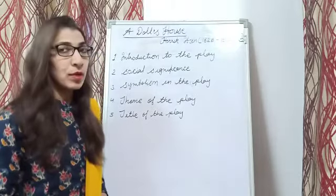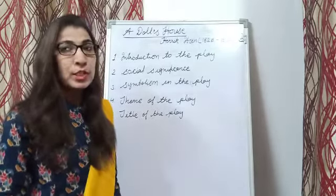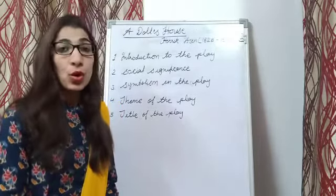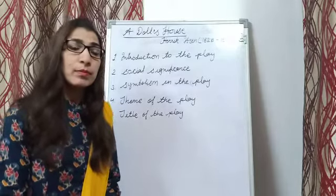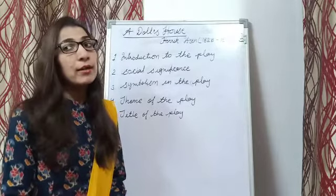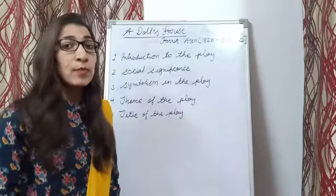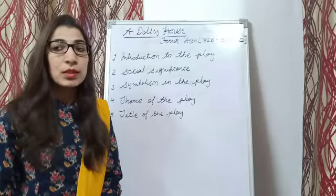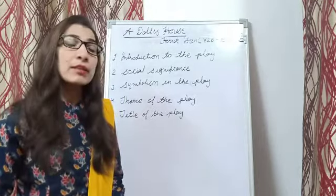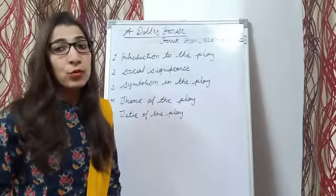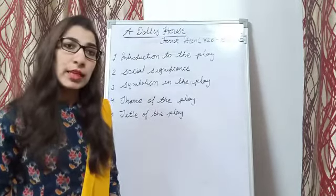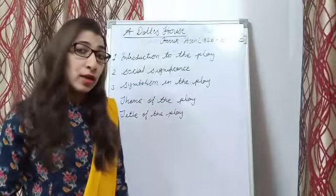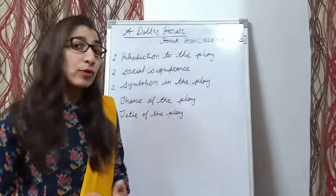In the play, the chief female character Nora is treated like a doll by her husband and her father, and she herself treats her children as her own dolls. This presents the situation of women where women are treated as dolls, where they have no identity of their own and they lead their life according to the wishes of the male members of their family. They don't have their own decisions.